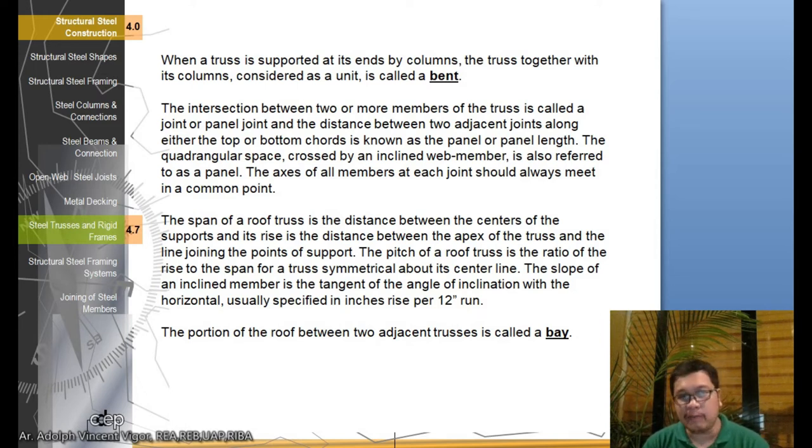The slope of an inclined member is the tangent of the angle of inclination with the horizontal, usually specified in inches rise per 12 inches run. The portion of the roof between two adjacent trusses is called a bay. If you have two trusses which are parallel and adjacent to each other, the distance between them is what you call a bay. Remember those terms class.